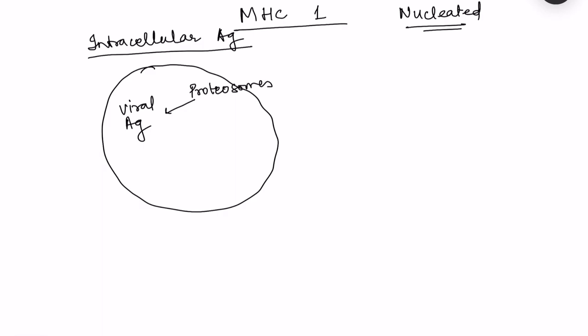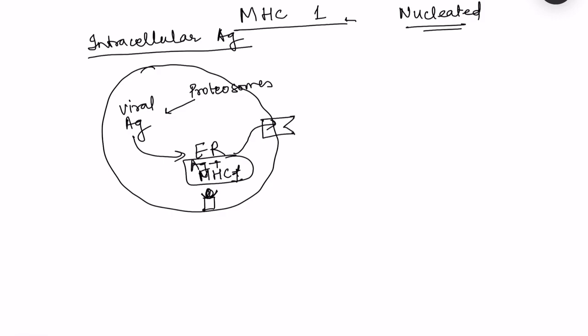The proteasomes digest the antigen and then fragments move to the endoplasmic reticulum. In the endoplasmic reticulum, there is also newly synthesized MHC1, and here a complex forms between the antigen and MHC1. This MHC1-antigen complex is then transported to the cell surface, where the antigen is presented on the MHC1. This is antigen presentation.